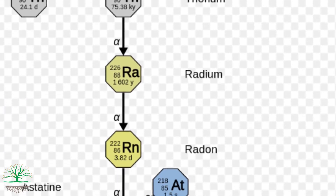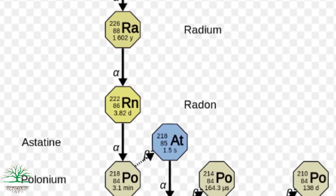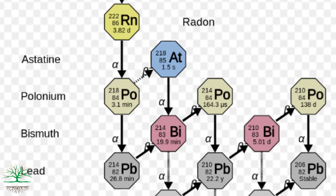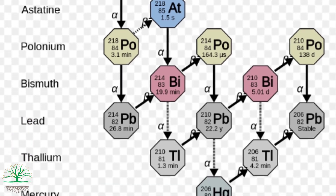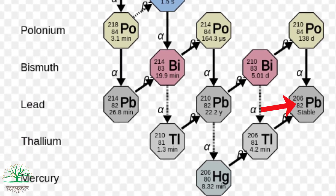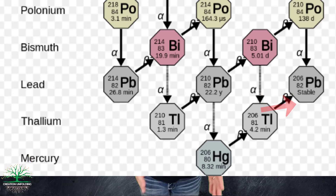Thorium-234 is the first step in a long chain of decay products before uranium-238 turns into lead-206. That's right — uranium-238 does not turn into lead in a single step. It actually takes 14 separate steps.